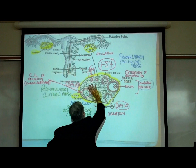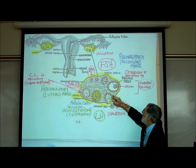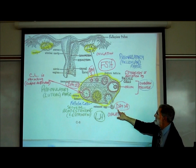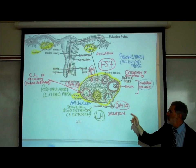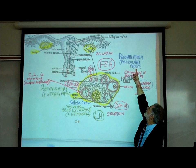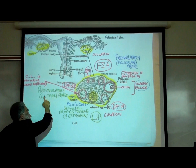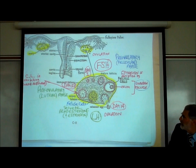If the cycle lasts 28 days, we divide it into two halves — day 1 to 14, and day 14 to 28. Around day 14, the egg pops out — that's called ovulation — and it enters the fallopian tube. The two weeks leading up to ovulation are called the pre-ovulatory or follicular phase. The two weeks after ovulation, day 14 to day 28, is called the post-ovulatory or luteal phase.